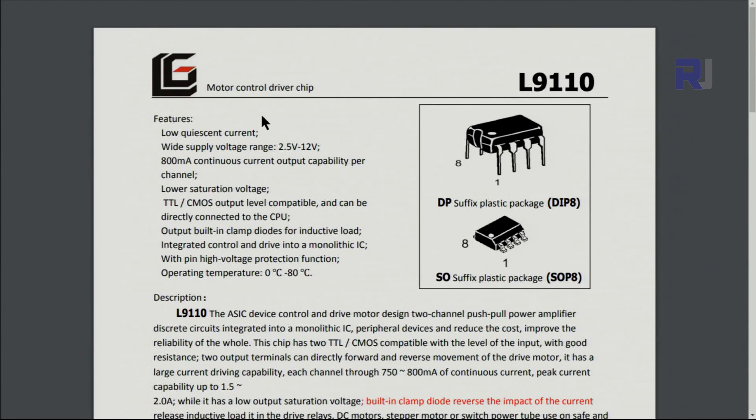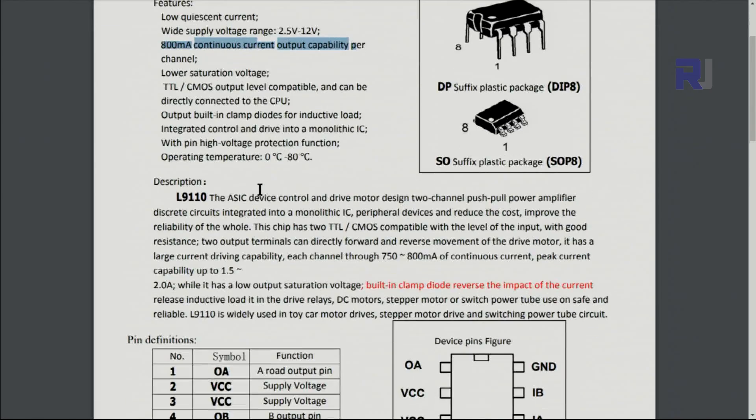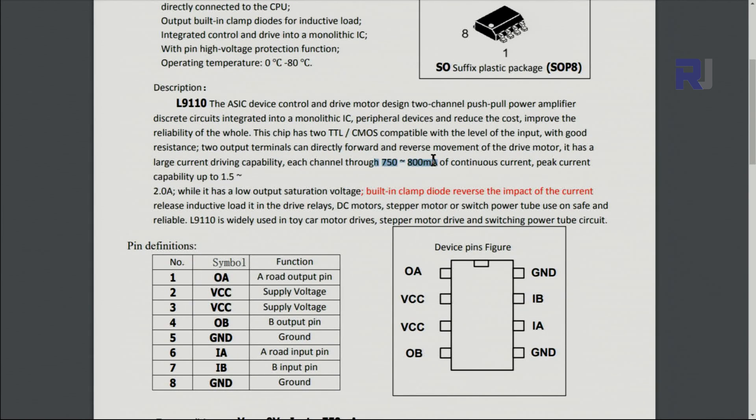Now let's have a look at the datasheet. This L9110 chip comes in two types, surface mount and DIP8. Operating voltage is 2.5 to 12 volts, and 800 milliampere continuous. That's very important to know because higher current will damage it. Peak current can go 1.5 to 2 amperes, but that is just momentarily.